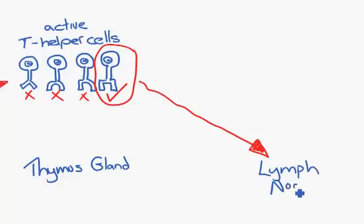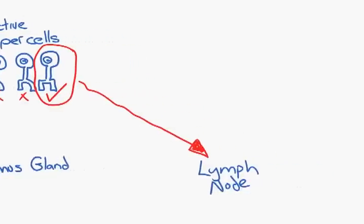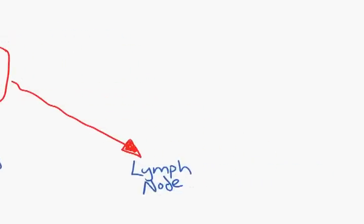And in the lymph node it meets up with many different B cells or B lymphocytes. Now through a similar process of matching up these areas, in the lymph nodes the corresponding B cell or B lymphocyte is triggered to become active. So it is activated.